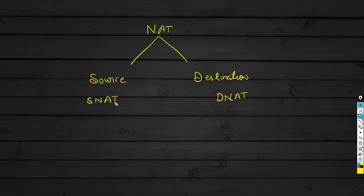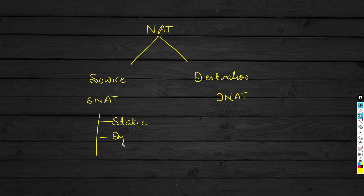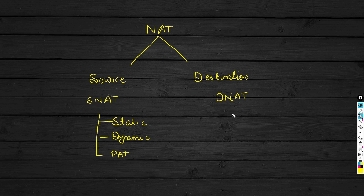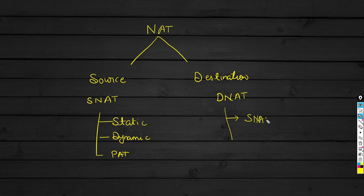In every scenario, we have three types of NAT. These are very common: Static NAT, Dynamic NAT, and the third one is PAT, which we also call Port Address Translation. Most of the time the NAT type used is Static NAT, where we do one-to-one mapping.